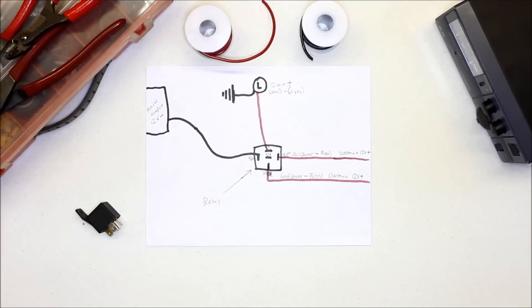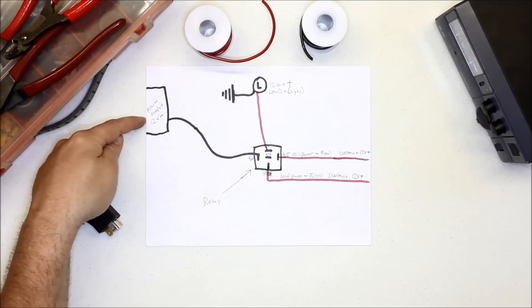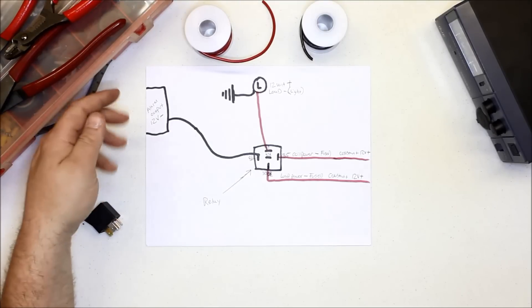With an output from an aftermarket alarm or remote start box, usually the outputs out of those boxes are negative 12 volts, and most things in vehicles are switched 12 volt positive. So how do you turn on and off an accessory with a negative output from an alarm or remote start box?